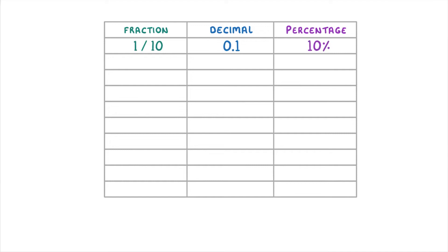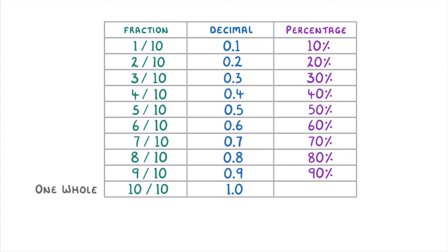Whereas if we had 2 over 10, that would be equivalent to 0.2, or 20%. So everything is just 2 times as big. And we could keep on going like this all the way up to 1 whole, which is 100%.